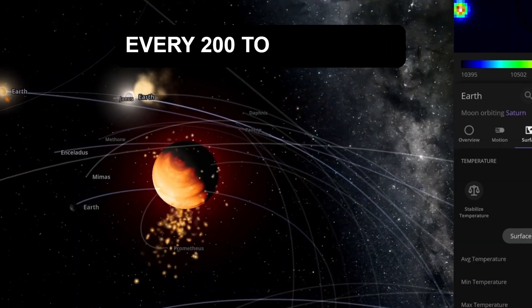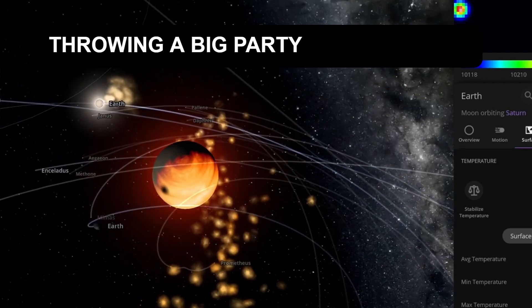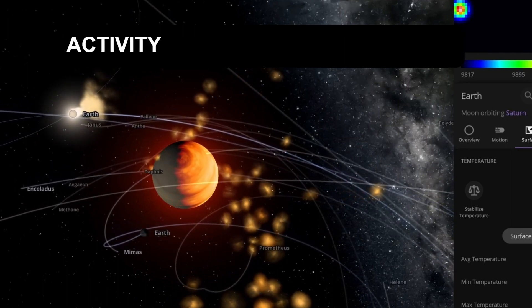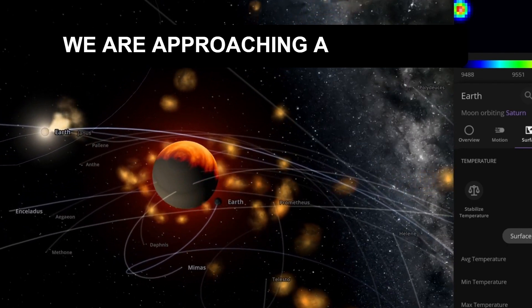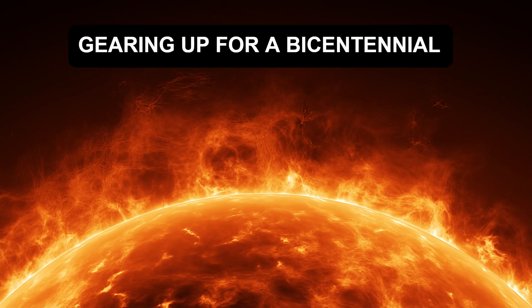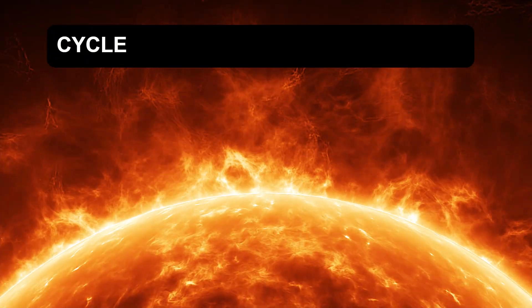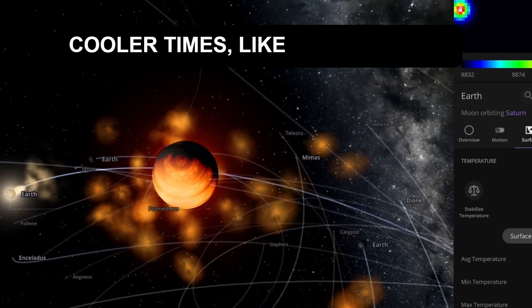And then finally, we have the Seuss cycle, which lasts about every 200 to 210 years. This is like the sun's way of throwing a big party every couple of centuries. It influences long-term solar activity and has left its mark in tree rings and ice cores. We are approaching a peak here as well. Picture the sun gearing up for a bicentennial celebration. Historically, peaks in the Seuss cycle align with warmer periods, while minimums have linked to cooler times like the Little Ice Age.